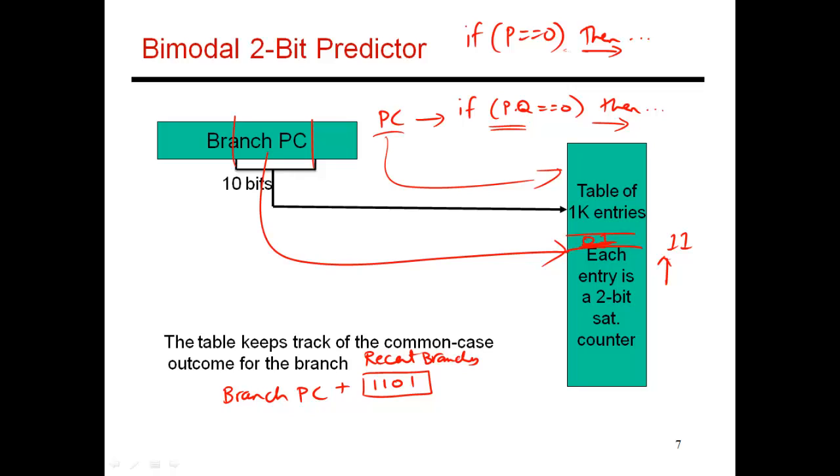So now instead of just using the PC to index over here and identify the common case, I'm going to use branch PC and this recent history to index into this table. And this entry will now keep track of the common case for this particular input. So it says that for this branch and for this history, recently this branch has been more biased towards being taken than not taken.